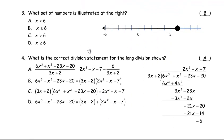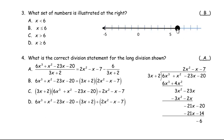For question number three: what set of numbers is illustrated? At six there's a solid dot, and we're talking about numbers to the left, so below six. The solid dot means you include six in your solution, so b is the correct answer: x is less than or equal to six. Answer a would be correct if there were an open circle, giving x less than six. Answers c and d are greater than, so they'd apply if the arrow pointed the other direction.